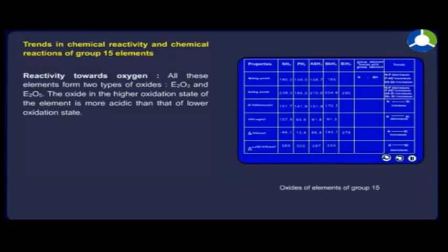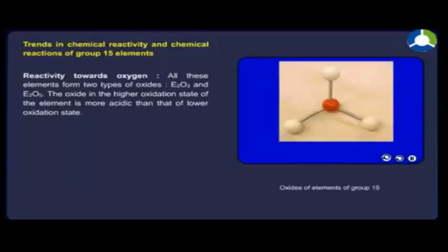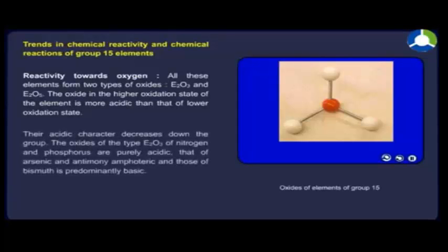Reactivity towards oxygen. All these elements form two types of oxides, E₂O₃ and E₂O₅. The oxides in the higher oxidation state of the element are more acidic than those of lower oxidation state. Their acidic character decreases down the group. The oxides of the type E₂O₃ of nitrogen and phosphorus are purely acidic, those of arsenic and antimony are amphoteric, and those of bismuth are predominantly basic.